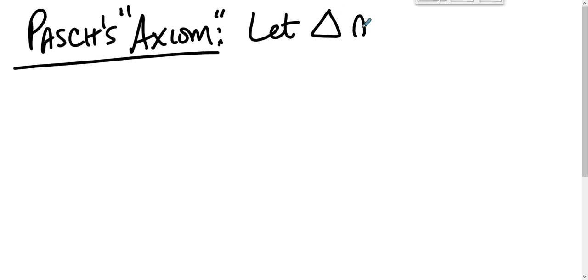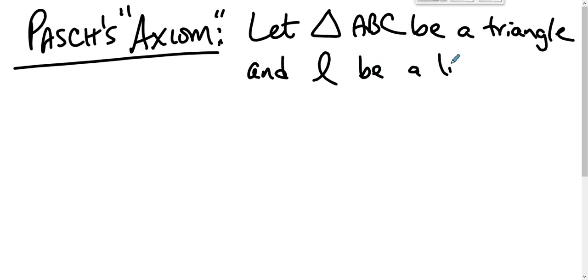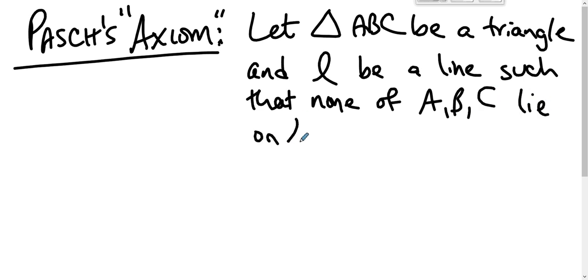So time to deal with Pasch's Axiom, which isn't really an axiom because we're gonna prove it. So it's Pasch's Axiom: we're gonna let triangle ABC be a triangle, and L be a line such that none of A or B or C lie on L.